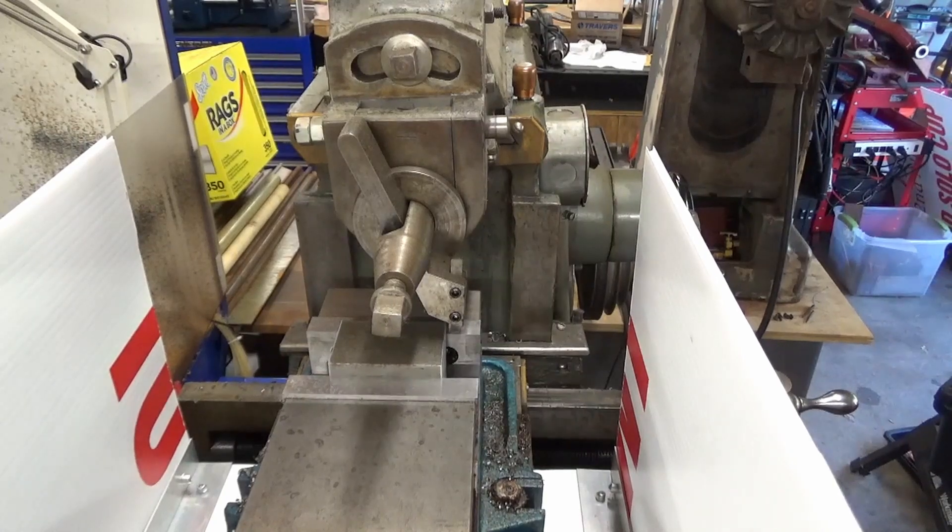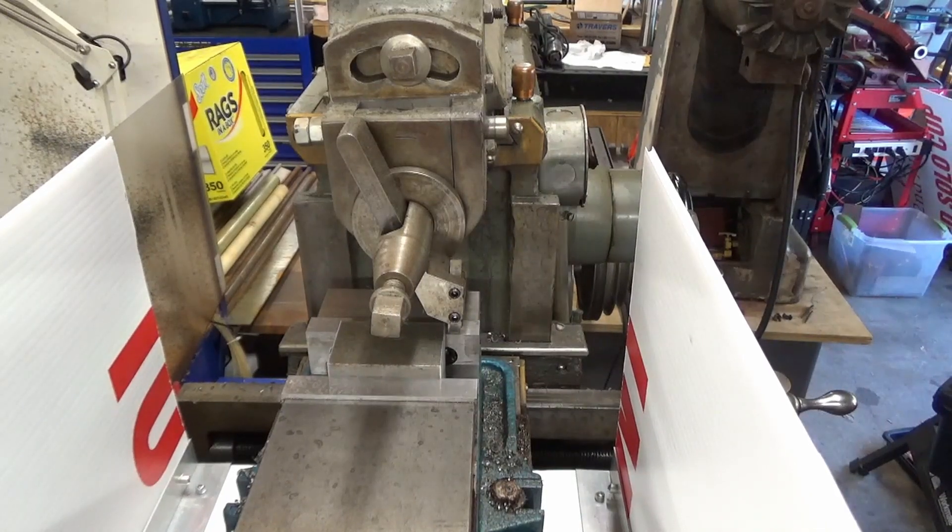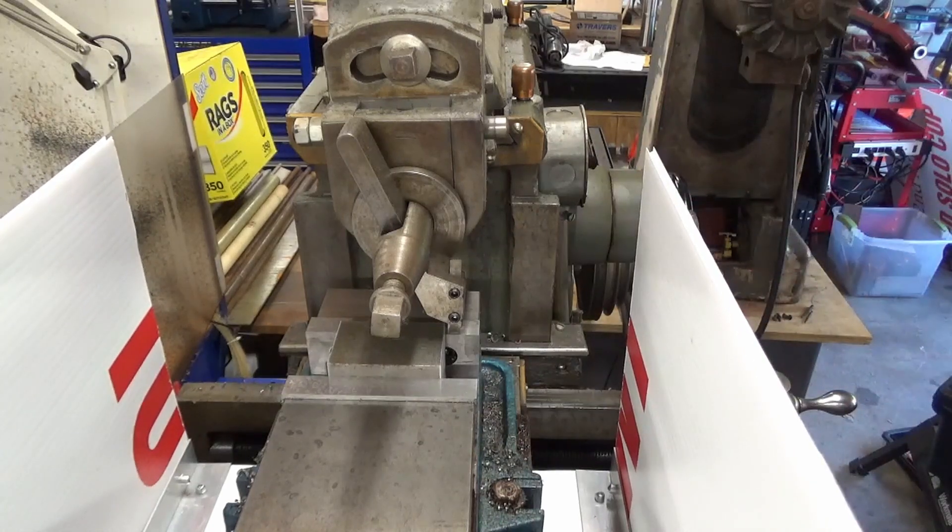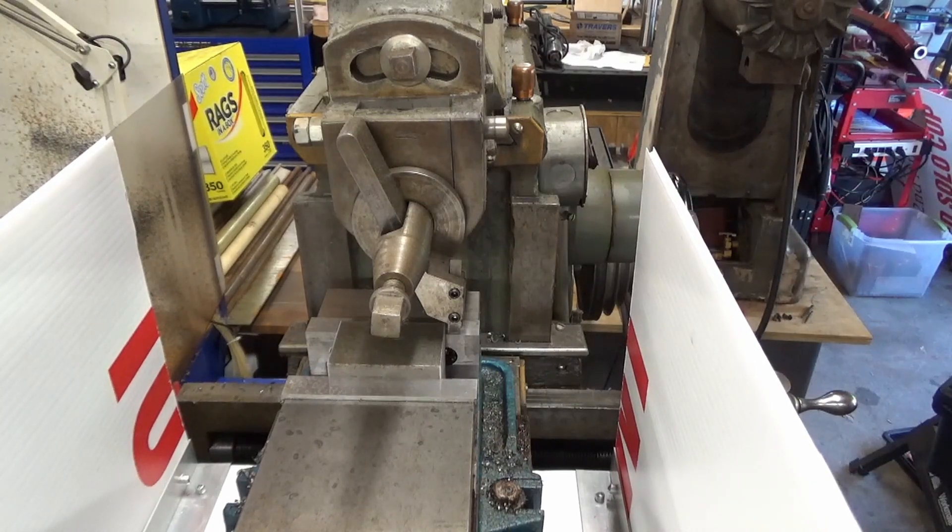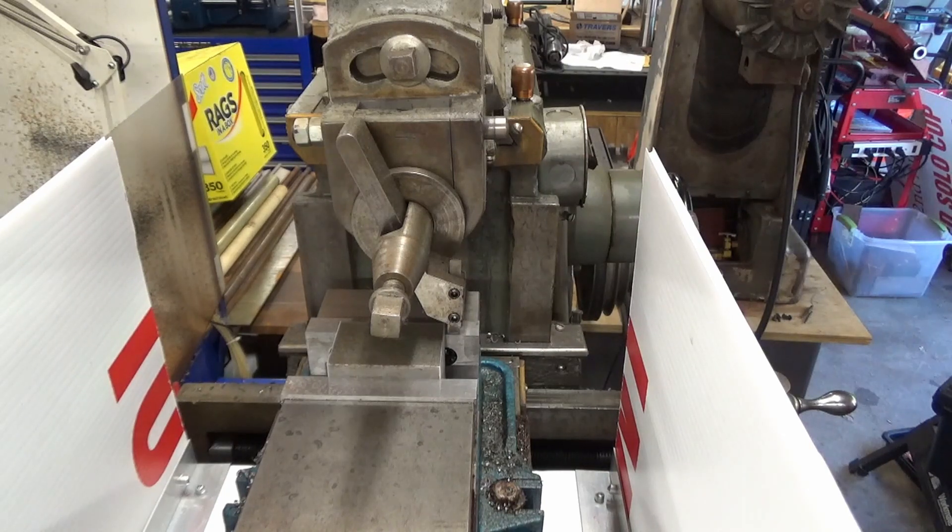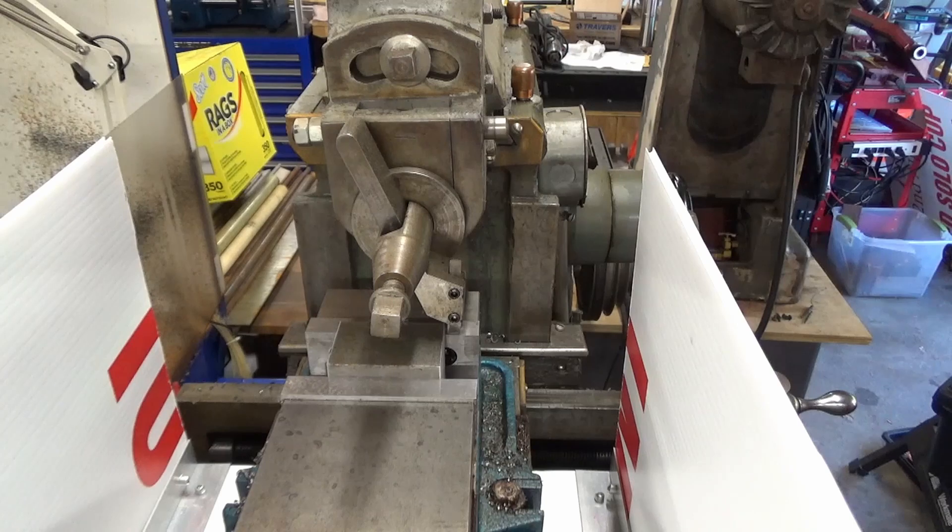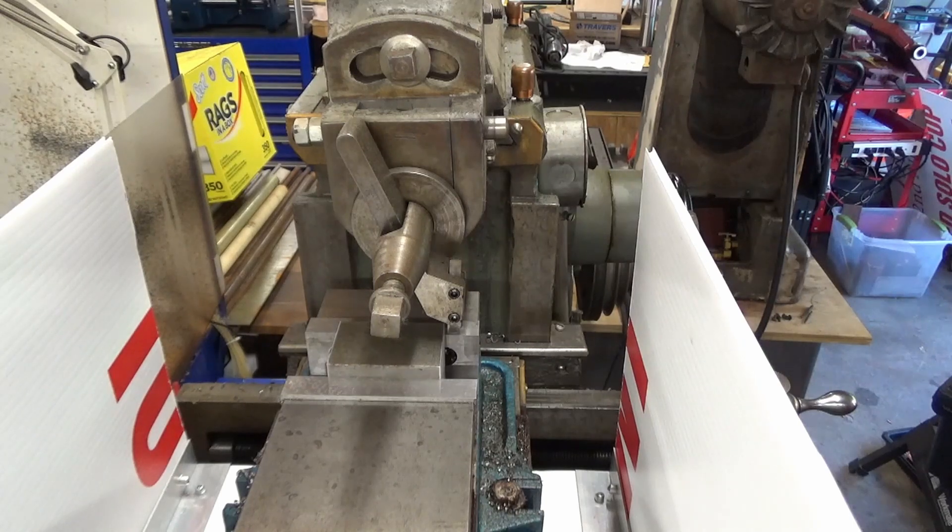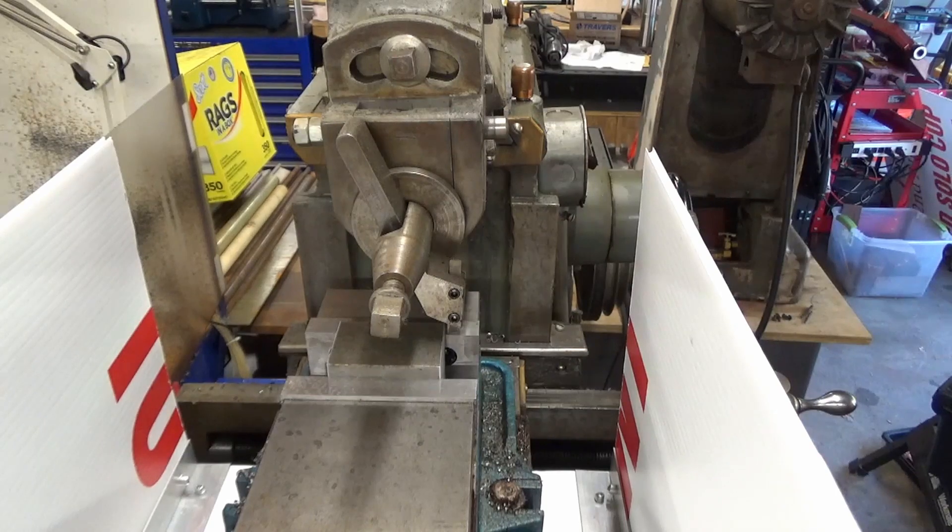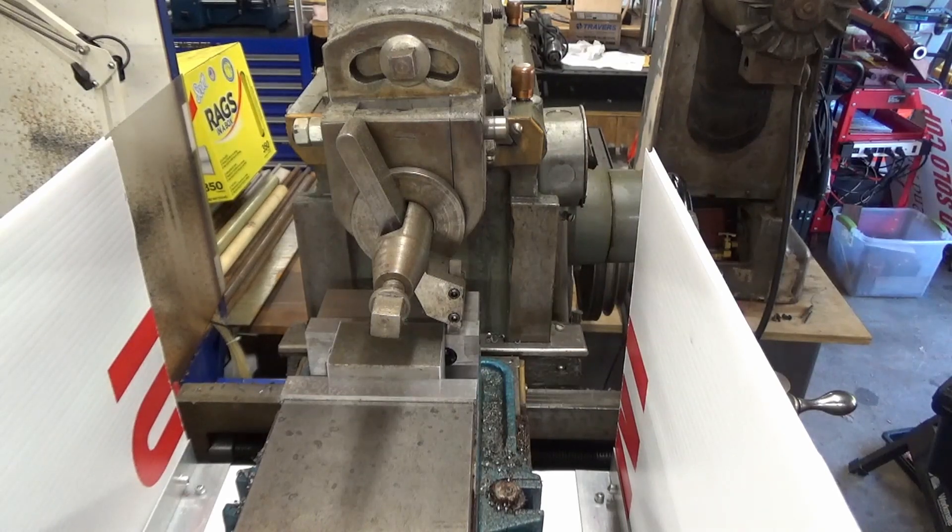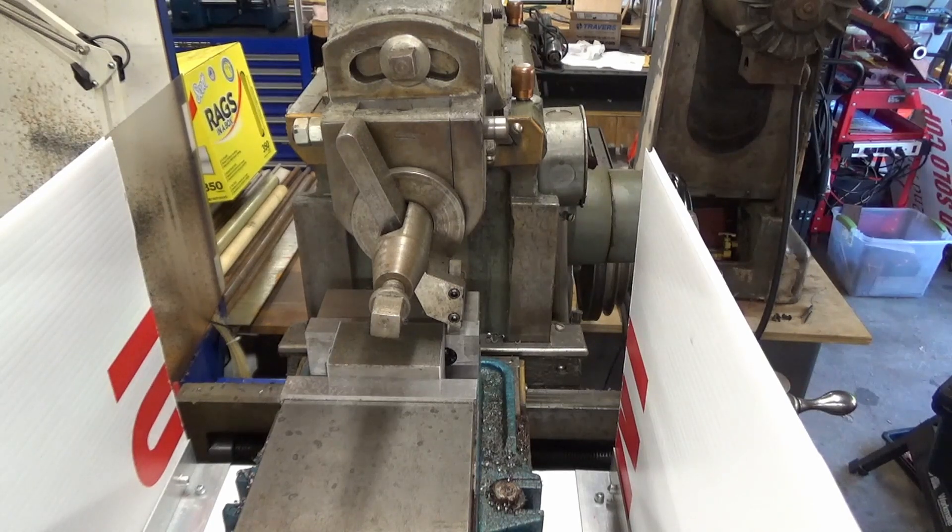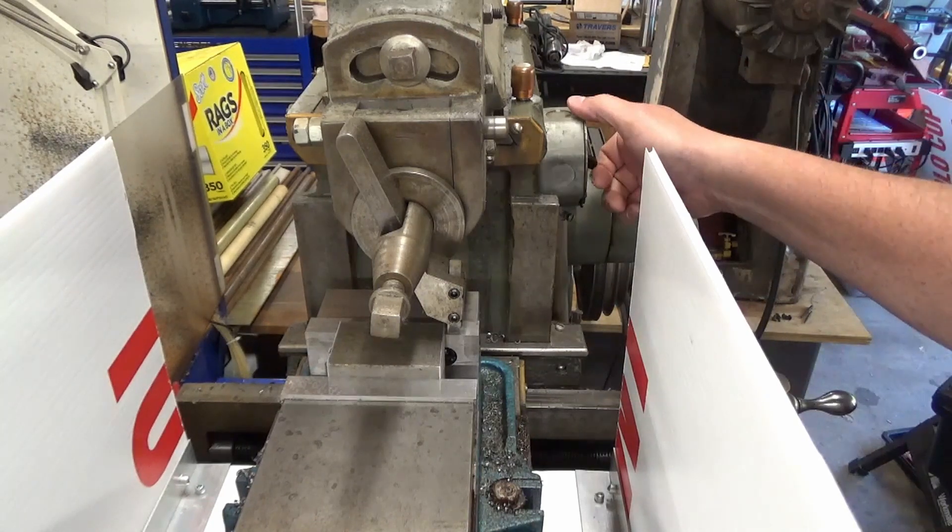I've got the first block set up in the shaper here with my super fancy chip guard. We'll see how this thing works. Before I get any comments on it, I realize that I don't have the shaper properly adjusted for the stroke length. It's taking a stroke that's way bigger than is needed, but I don't care. I'm not in a hurry, and it's not going to affect anything other than how long it takes to do it. Let's get this started.